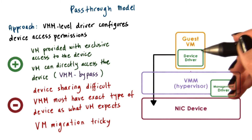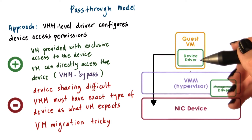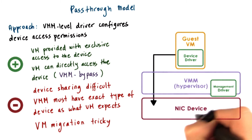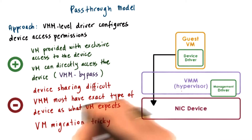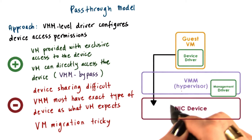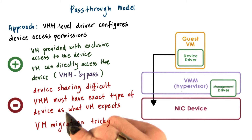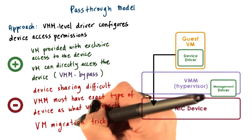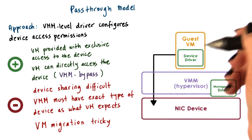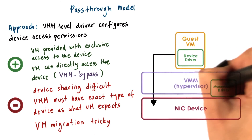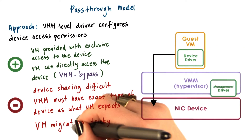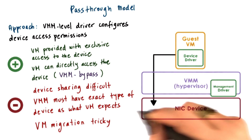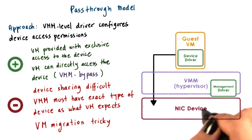This makes migration difficult, in particular because there may be some device-specific state and potentially even device-resident state that would also need to be copied, migrated, and then properly configured at the destination node. Basically, that turns VM migration not into a hypervisor and VM-specific operation, but it needs to be implemented in a way that knows how to deal with the device specifics of all of the particular devices that are of interest.